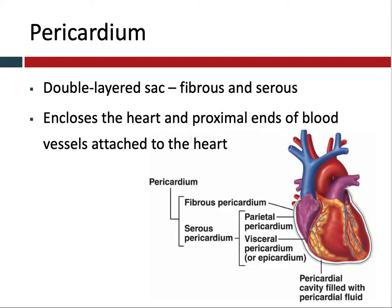The pericardium is a double-layered sac or pouch. It is made up of the fibrous layer and the serous layer. You can see in this diagram there's the fibrous pericardium and then there's the serous pericardium. The serous pericardium is actually made up of two layers: the parietal layer of the pericardium, which is going to be further towards the outside, and the visceral layer of the pericardium, which is going to be tight on the heart and is actually the outer wall of the heart itself.